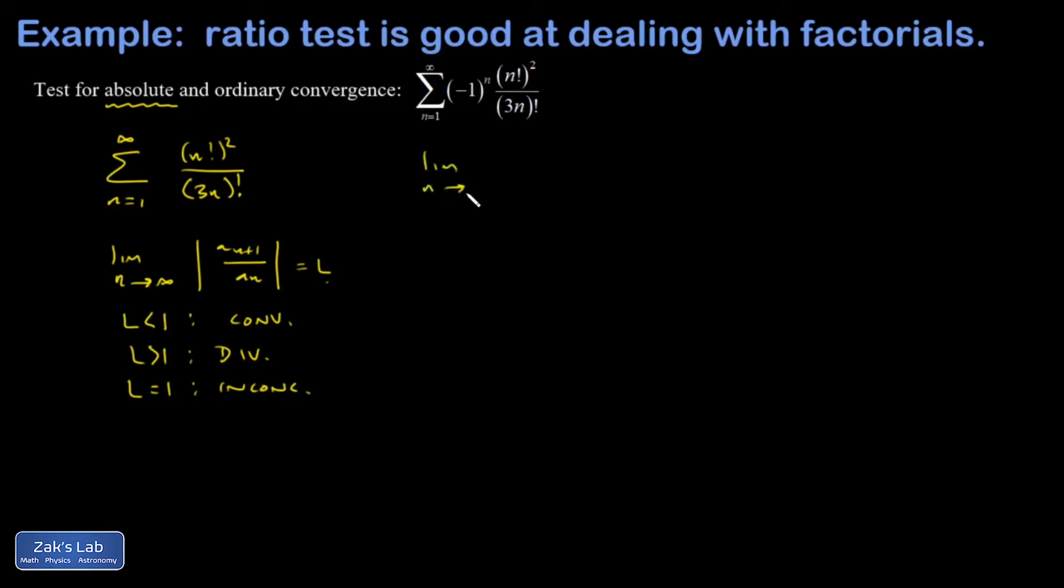The large n limit of a_n plus 1. So you just replace the n's with n plus 1's. That's n plus 1 factorial squared over 3 times (n plus 1) all factorial, divided by the a_n's, which is the same as multiplying by the reciprocal of those.